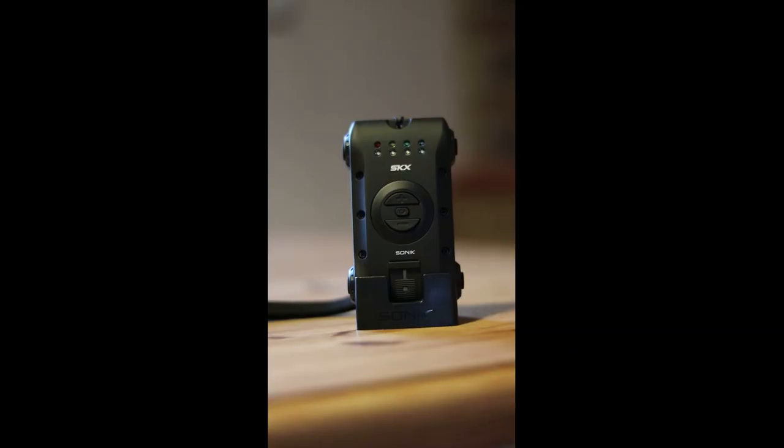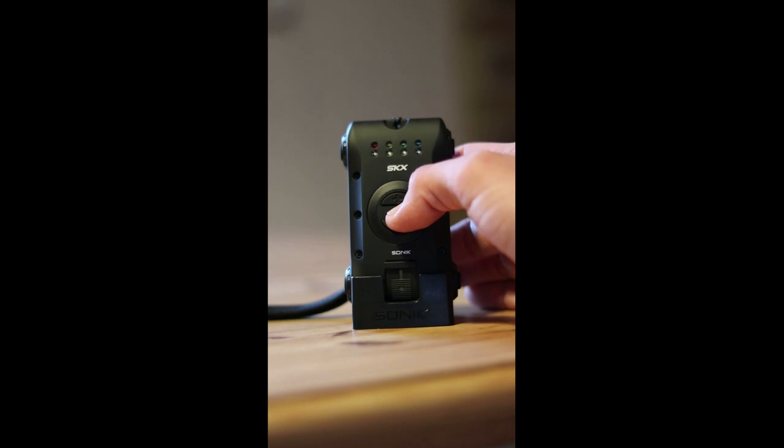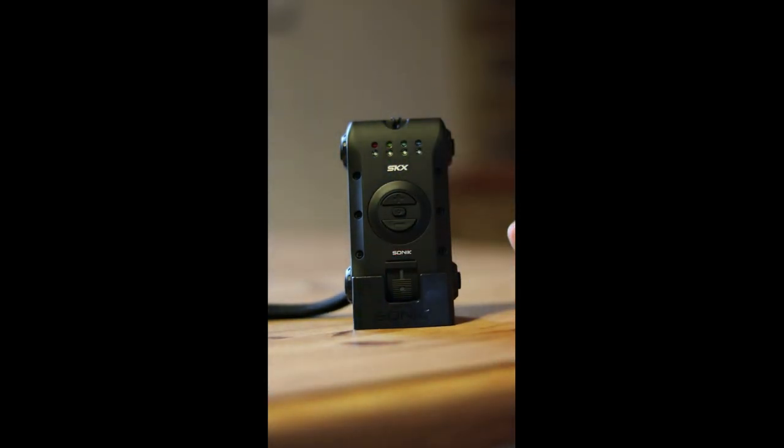Okay then, so let's have a look at the receiver. The receiver is sat on its little table stand. Same as on the alarm head itself, you've got the power button in the center. So we'll switch it on. All of the lights will illuminate to show me that it's working. You've got two lines of lights. The top line will illuminate if you get a take and the bottom line, which is white, will illuminate if you get a drop back.